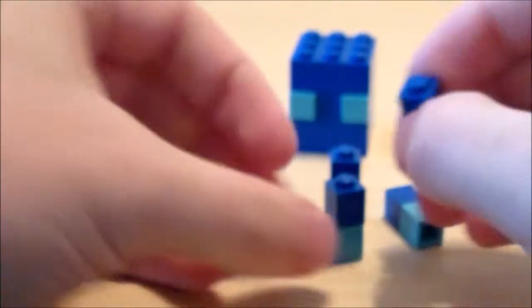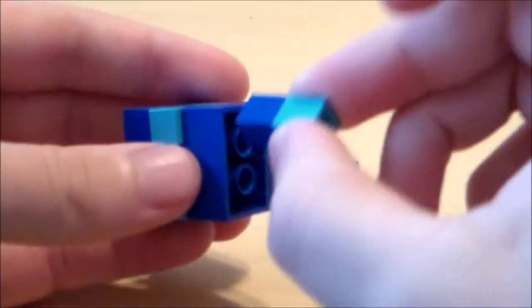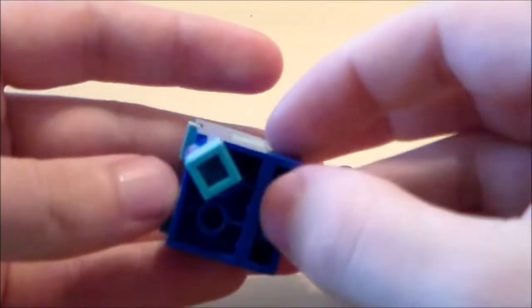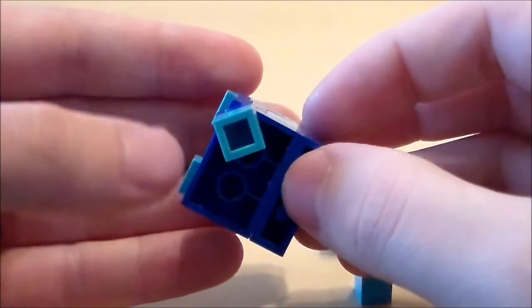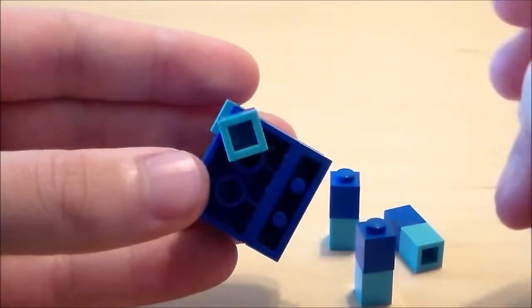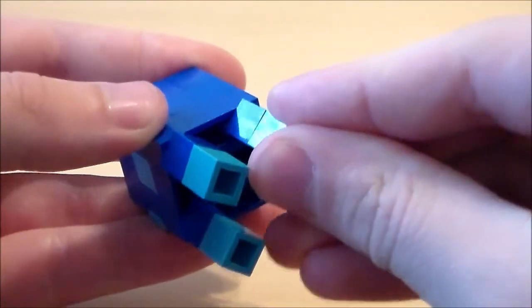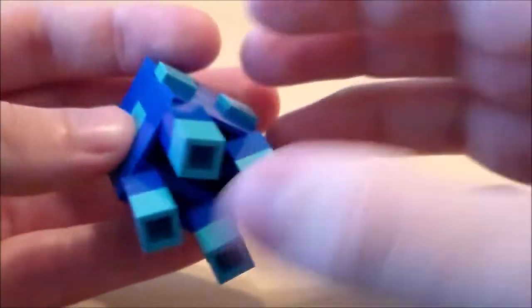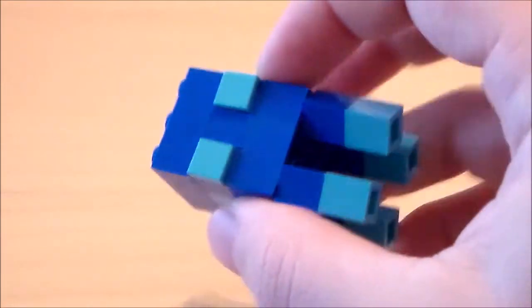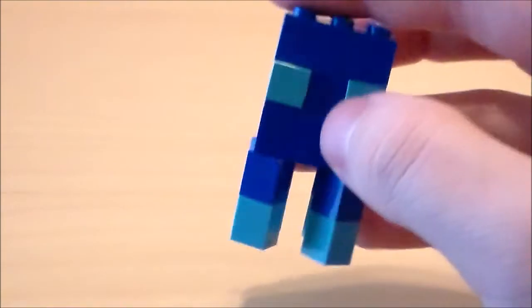And then once I have four of those, I'm going to get the body for my squid and I'm going to attach the legs onto the corners like that. And you'll kind of angle the legs like so, so one on each corner. And then you just kind of angle them at a 45 degree angle. And then once you have all the legs attached onto the bottom, you have your LEGO Minecraft glow squid.